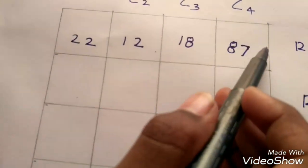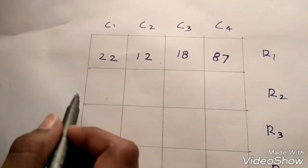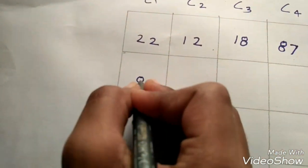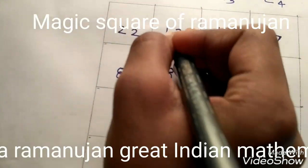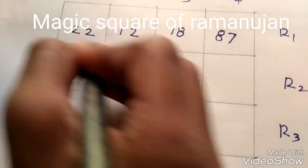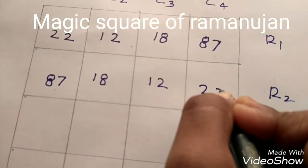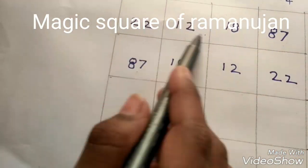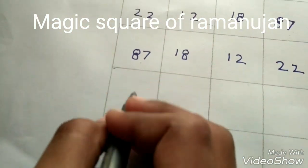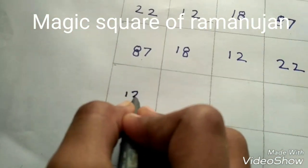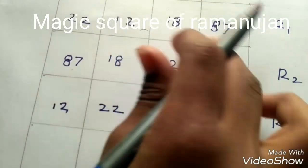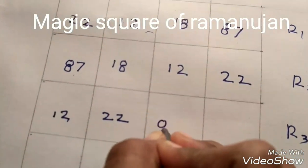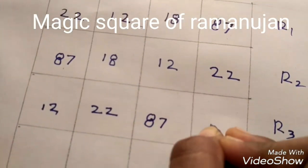We should reverse these 4 boxes. 87 and 18 we should write here. 12 we should write here and 22 we should write here. We should reverse these 2 boxes. 12 and 22. We should reverse these 2 boxes, 87 and 18.